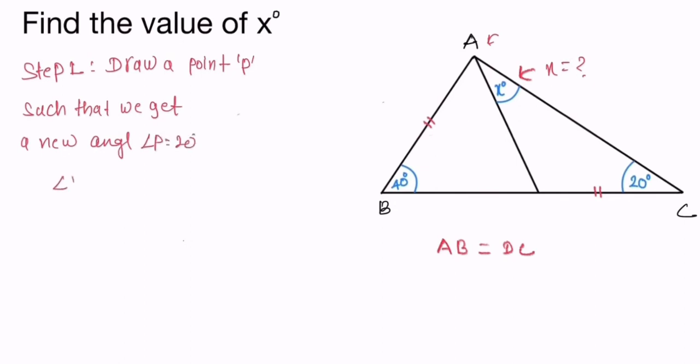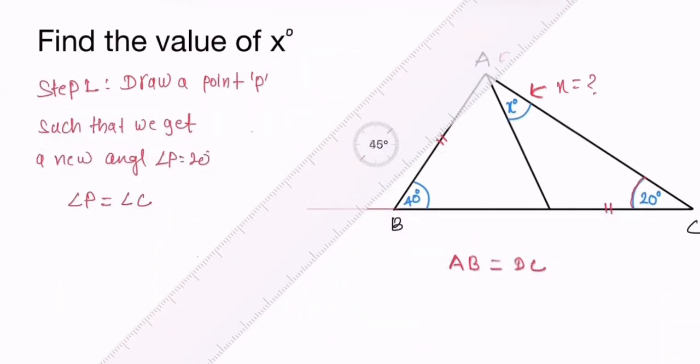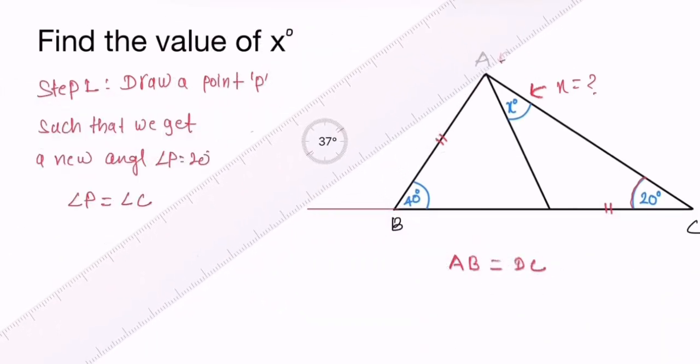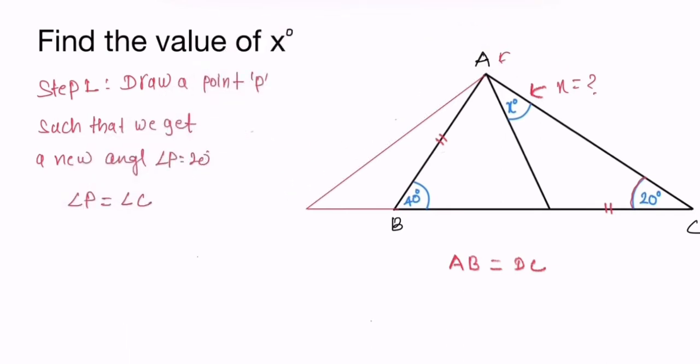Then we extend the point P like that and draw this line. This point and this point is P. And this angle, angle APB, is 20 degrees. So this is 20 degrees and this is 40 degrees.